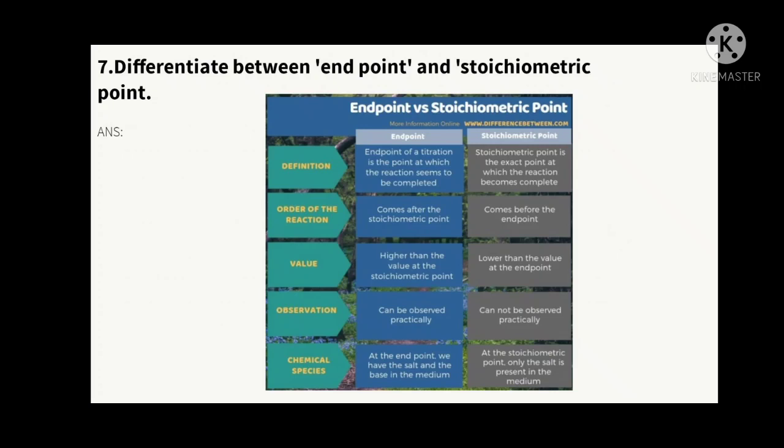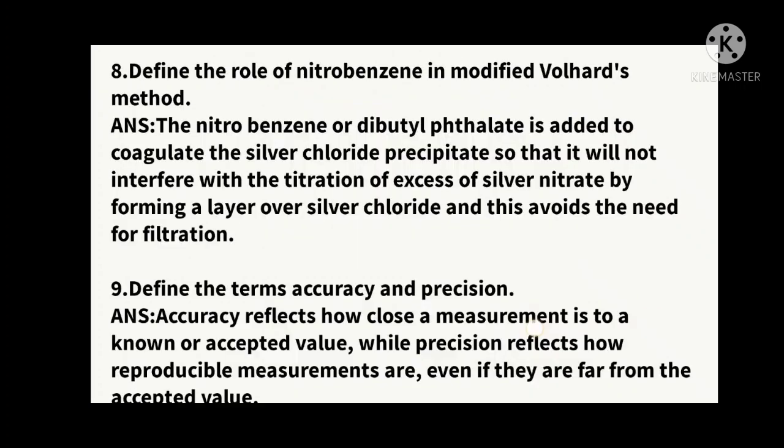Seventh question: difference between endpoint and stoichiometric point. The endpoint of a titration is the point at which the reaction seems to be completed. The stoichiometric point is the exact point at which the reaction becomes complete. The stoichiometric point comes before the endpoint.